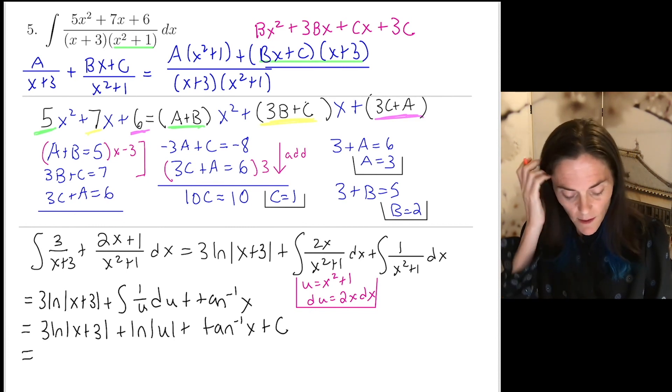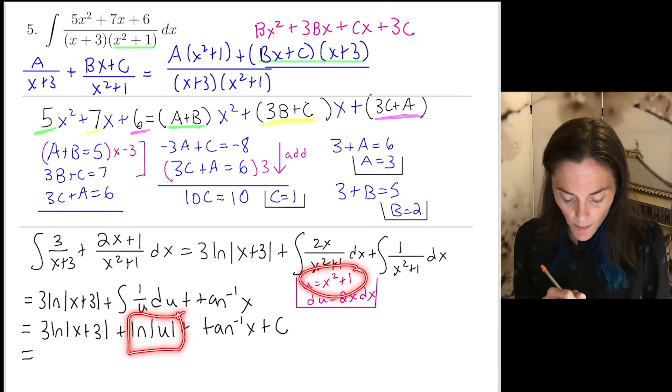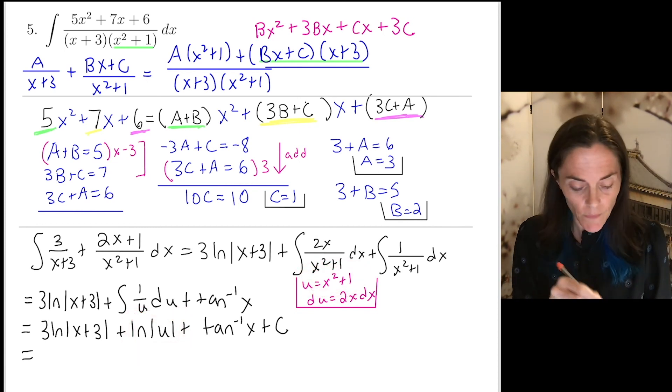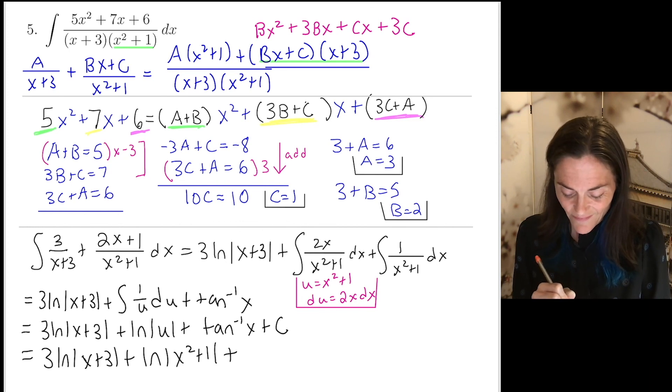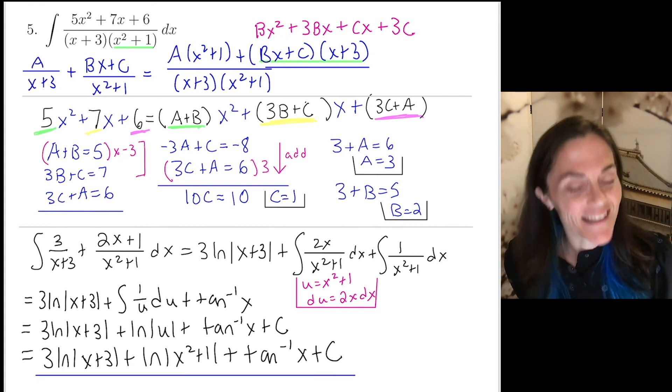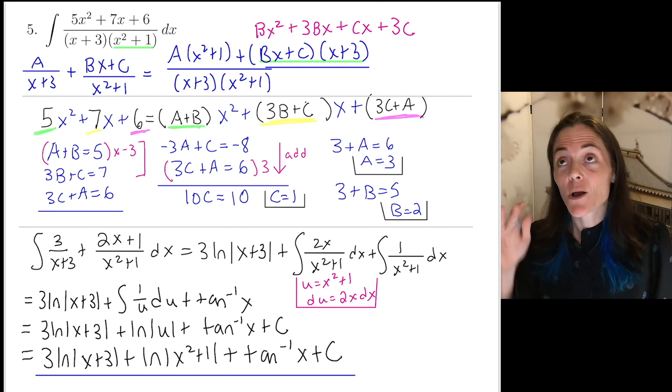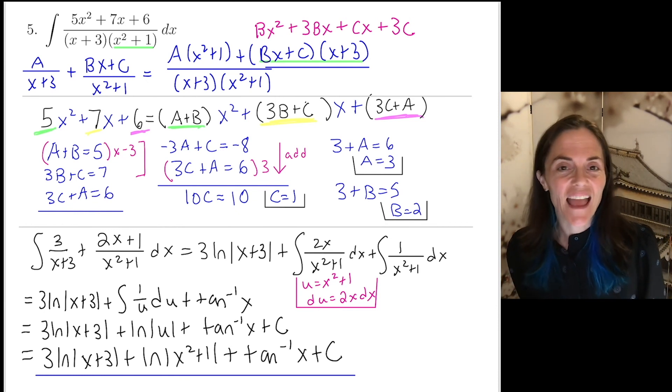And then finally, in this middle term, we go back to x. And it's here. U is x squared plus 1. The final step is composition. So we have 3 ln absolute value of x plus 3. We have plus ln absolute value of x squared plus 1. And then the third term is tan inverse of x. And plus c. This part, all of these terms, this is our final answer. And this is the end of our quiz 1 extra practice. So thank you very much and good luck on the quiz.